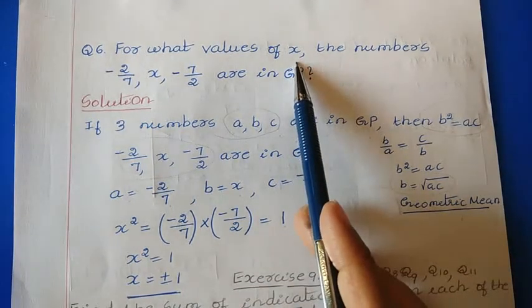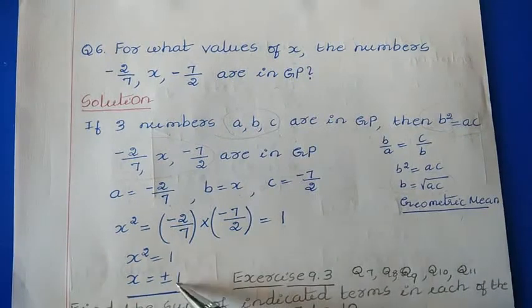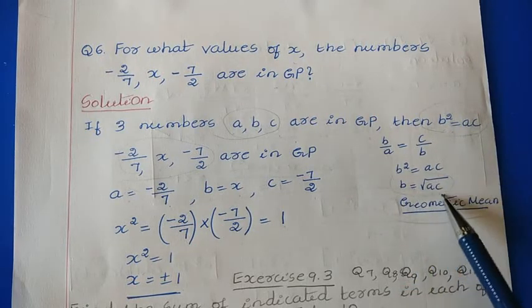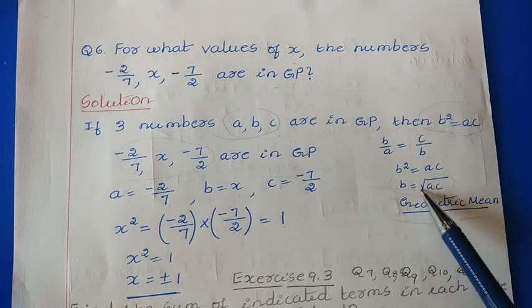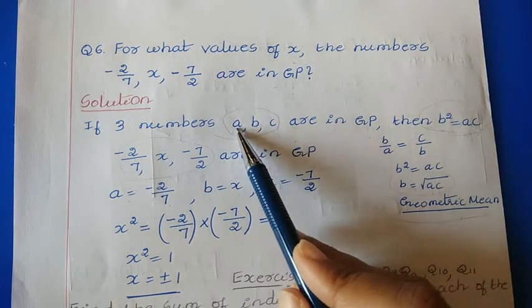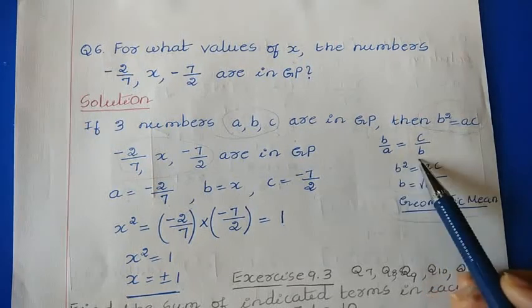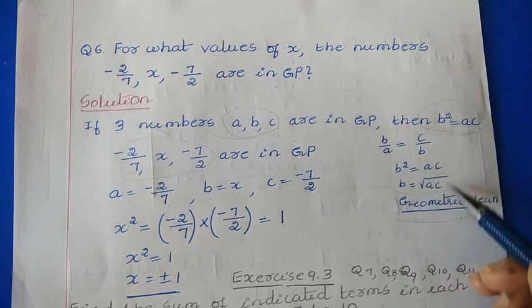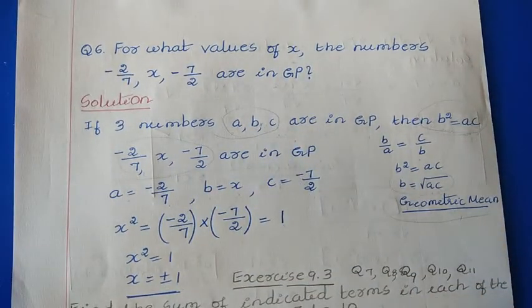So the x value is ±1. Instead of using the nth term formula, I used the geometric mean property: b² = ac. This comes from the fact that in a GP the common ratio is constant, so b/a = c/b, which gives b² = ac, and therefore b = √(ac). Comparing with the given values, we get x = ±1. Please like, subscribe, and click the bell icon for regular notifications. Thanks for watching.